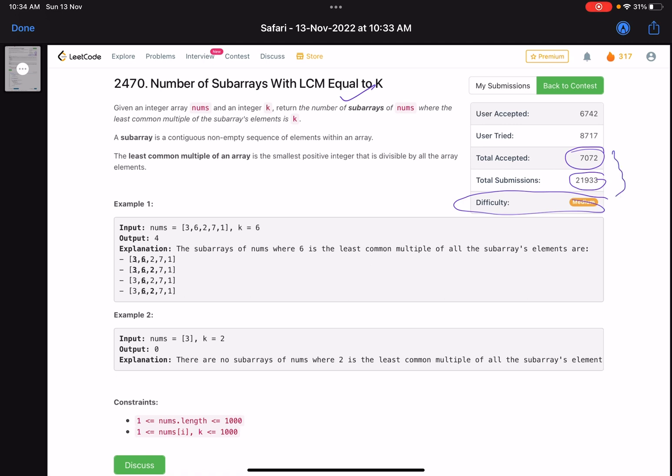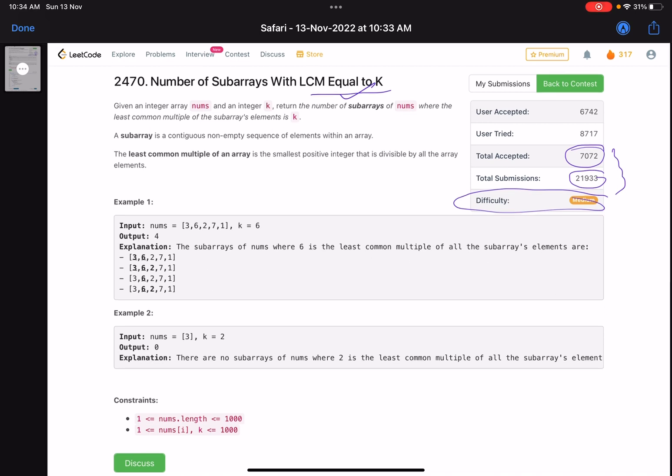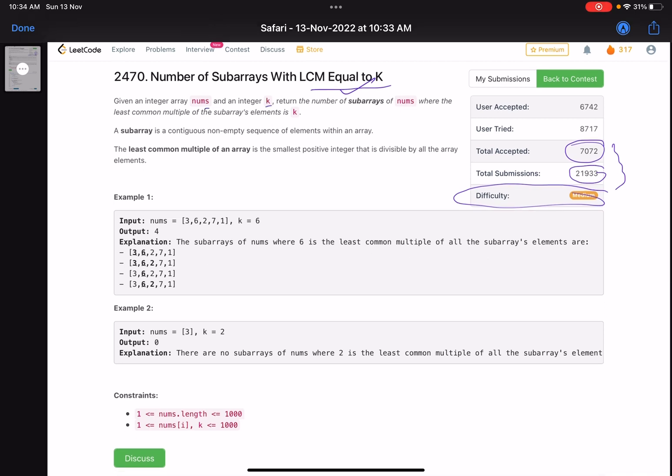The problem name is 'Number of Subarrays with LCM Equal to K'. Given an integer array nums and an integer k, return the number of subarrays where the least common multiple of the subarray's elements equals k. A subarray is a contiguous non-empty sequence of elements within an array.